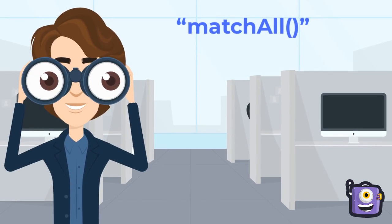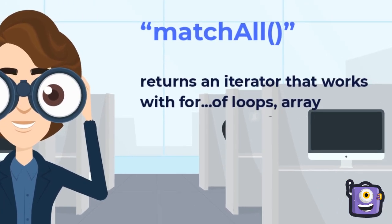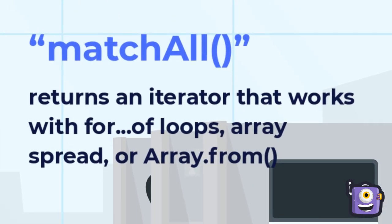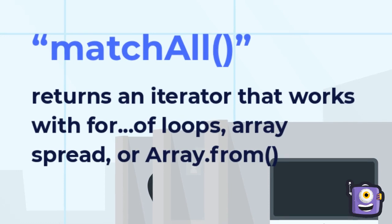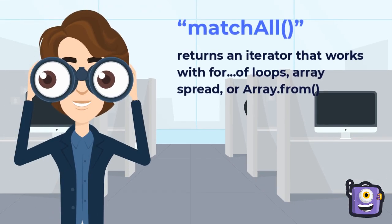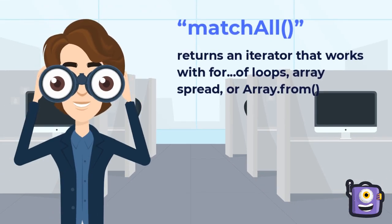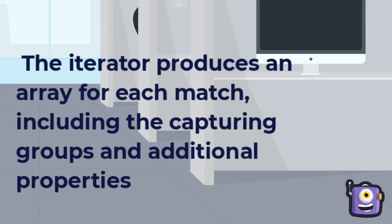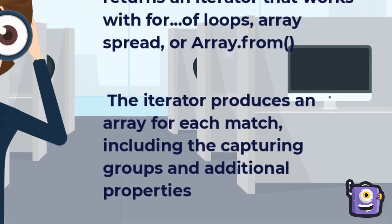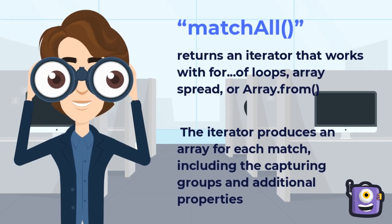matchAll returns an iterator that works with for-of loops, array spread, or Array.from(). The iterator produces an array for each match, including the capturing groups and additional properties.